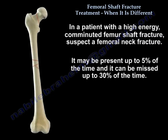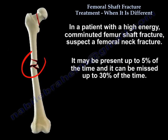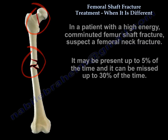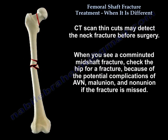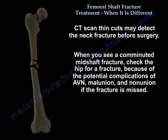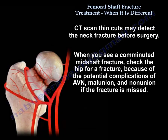In a patient with high-energy comminuted femoral shaft fracture, suspect a femoral neck fracture. It may be present up to 5% of the time, and it can be missed up to 30% of the time. CT scan thin cuts may detect the neck fracture before surgery. When you see a comminuted midshaft fracture, check the hip for a fracture because of the potential complication of AVN, malunion, and non-union.